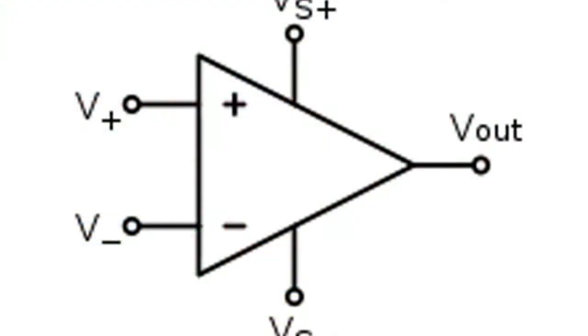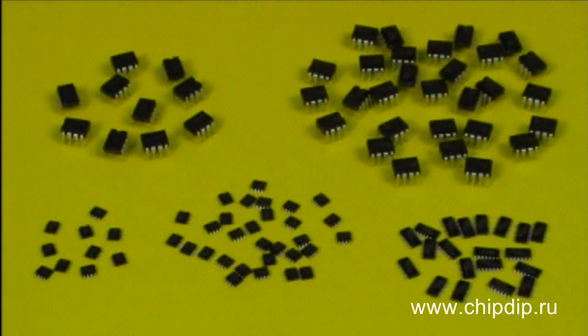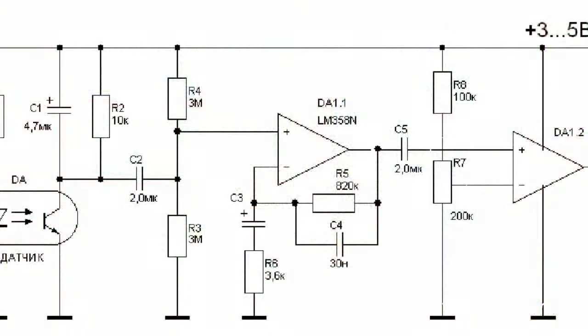An operational amplifier is a direct current high gain amplifier with a differential input and usually a single-ended output. Operational amplifiers are almost always used in circuits with deep negative feedback, which due to high gain fully determines the rate of transmission of the resulting scheme. Currently operational amplifiers are widely used in the form of separate chips as well as functional blocks or more complex integrated circuits. Such popularity is due to the fact that the operational amplifier is a universal unit with characteristics close to ideal, and a variety of electronic assemblies can be constructed on its basis.